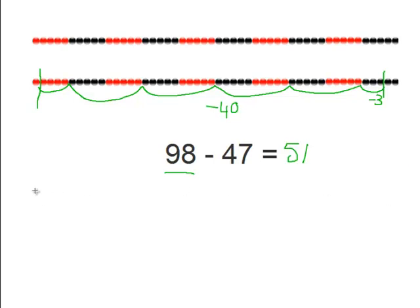So we're going to round up the number to the nearest ten. So again, ninety-eight minus forty-seven equals something. So let's round up ninety-eight to one hundred. So we must add two to make it one hundred. And if we add two to the ninety-eight, we must add two to the forty-seven as well. So ninety-eight plus two equals one hundred, and forty-seven plus two equals forty-nine.